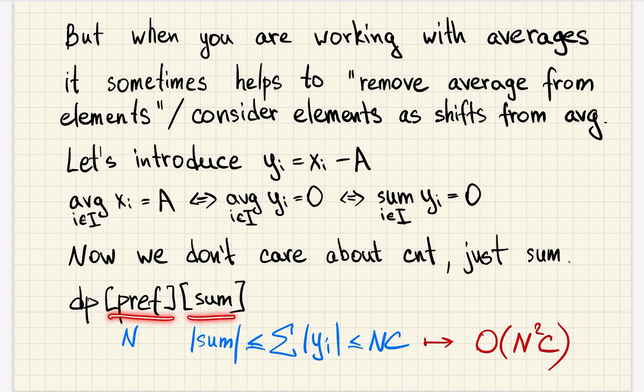So the state is just prefix and sum. We have changed the values and now they can be negative, but they are still between minus C and C. Actually, it is possible to write it accurately so it works in just the same time. So the range of possible sums is the same as it was before. But just saying that sums range from minus N times C to N times C is also fine. That's just constant overhead. So now this DP works in N squared times C.